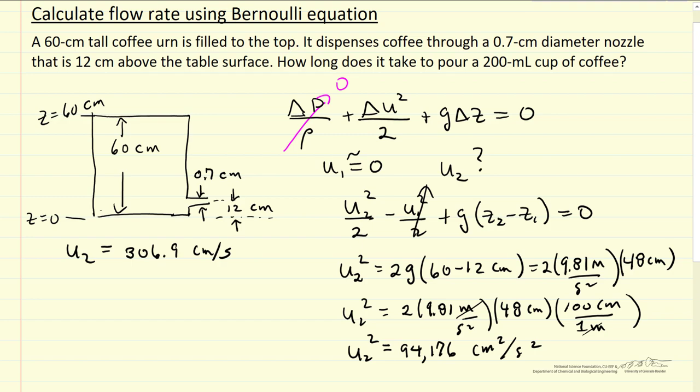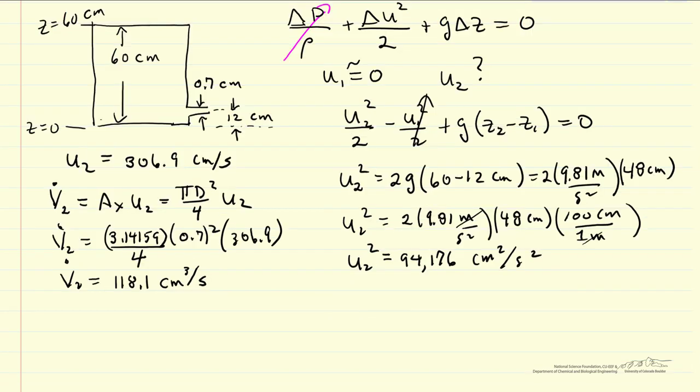What we're interested in is the volumetric flow rate. So the volumetric flow rate V2 is going to be the cross-section area of the nozzle times U2. So that's pi D squared over four times U2. Let me pause and substitute numbers. So substitute in the diameter 0.7. Calculate the volumetric flow rate.